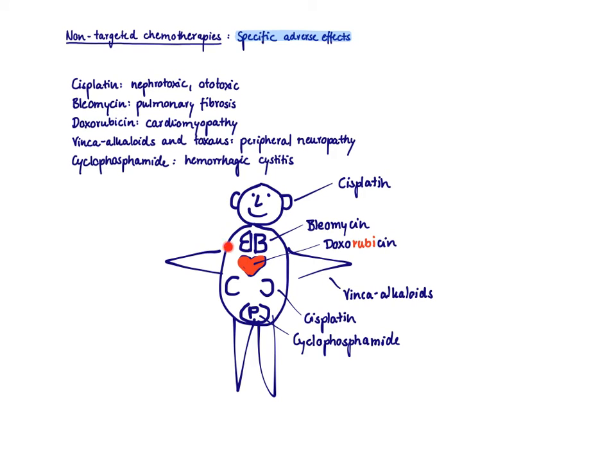Then we have the vinca alkaloids, the V for the arm and the legs, the peripheral neuropathy, the tingling in your fingers and feet. And then we have the cyclophosphamide, which is toxic to your bladder. So we have here the cyclone and then the phosphamide. And this should remind you about the hemorrhagic cystitis that cyclophosphamide can cause.